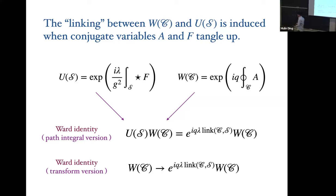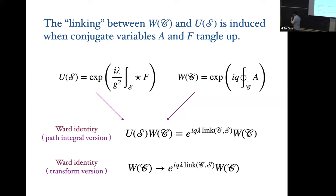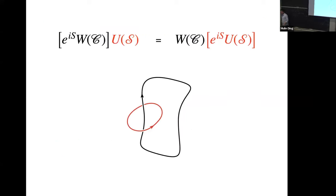The Ward identity can be stated actively: U is a non-local operator integrated over a contour, and acts as a re-phasing. One amusing feature is that this gives new perspectives on phenomena you might think are distinct but are actually connected. If we think of W as part of the dynamics — part of the action — it looks just like a charged particle worldline. And U, evaluated on a spacelike slice, is simply the electric flux — an innocuous thing you're familiar with: electric Gauss's law.